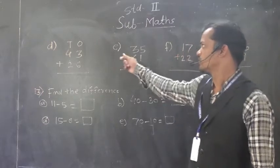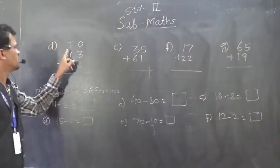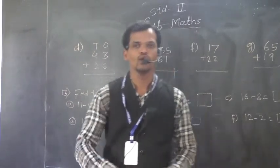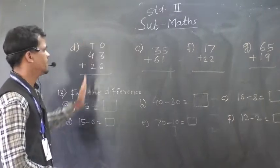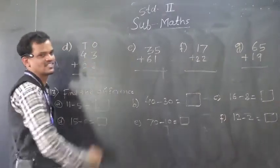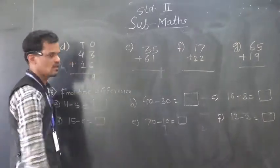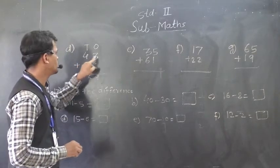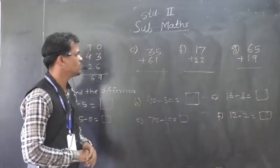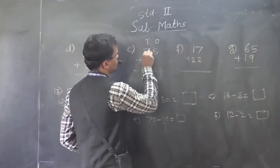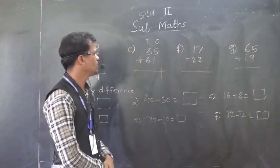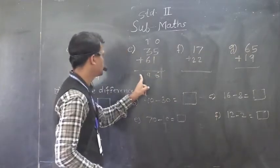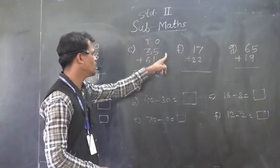Find the sum, D question. 43 plus 26, this is the vertical arrangement. And you have to add the columns: 1's column, 10's column. So, see, 3 plus 6, so 3 plus 6, 9. And, 4 plus 2, 6. So, 69 is the sum of 43 and 26. Then, E1, here 35 plus 61. So, 5 plus 1, 6. 3 plus 6, 9. So, 96 is the sum of 35 and 61.